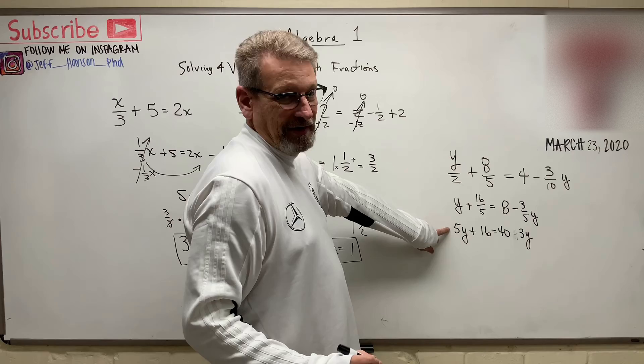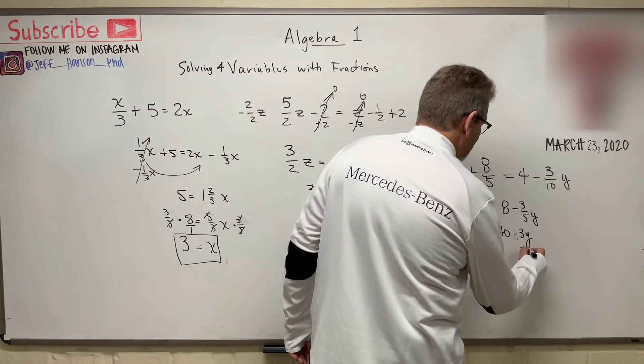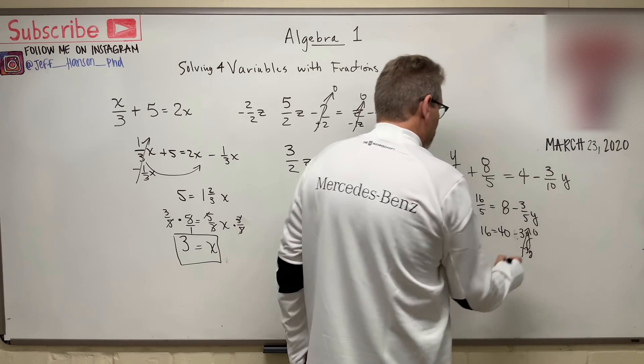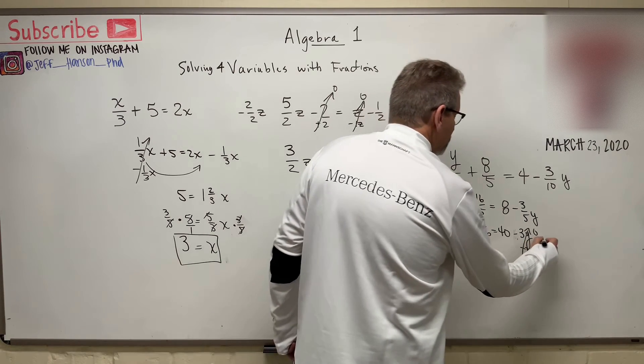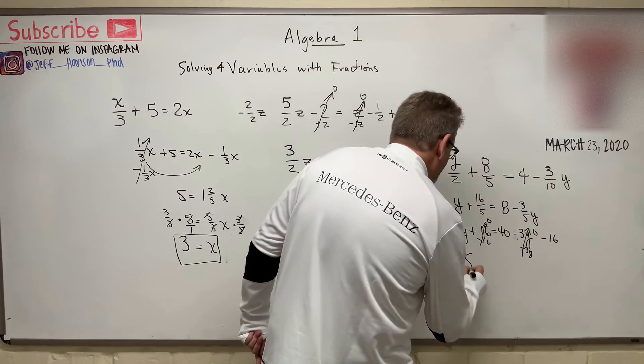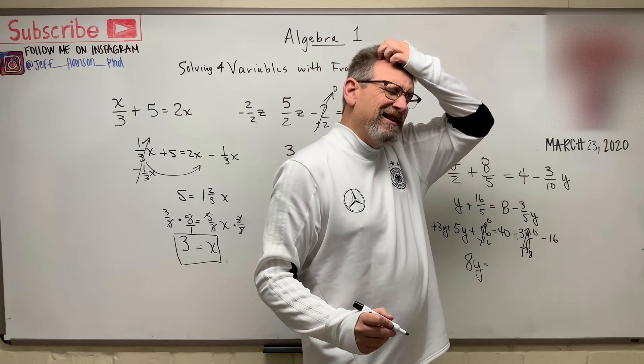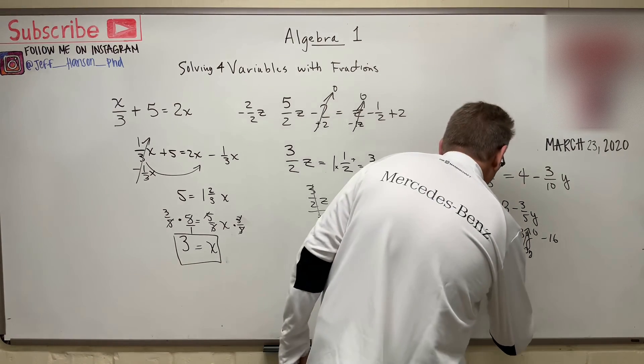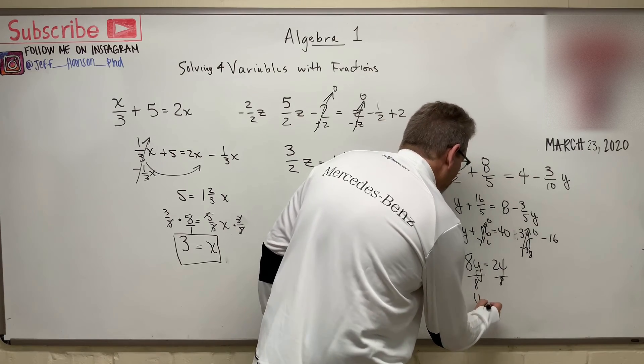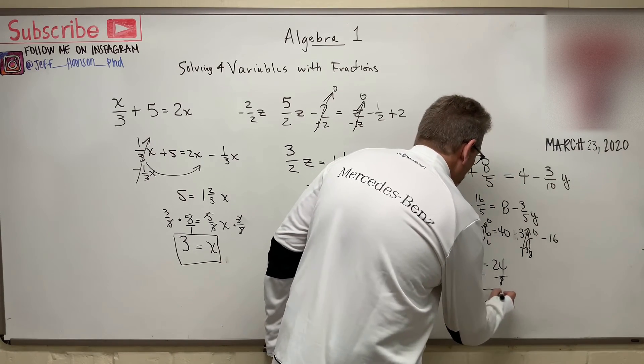Now that is pretty good, because now that's looking pretty much like these other ones that we just did. So how about we do this? Add 3y, add 3y. That would go to 0, wouldn't it? Subtract 16, subtract 16. Now that goes to 0. So 3 plus 5 is 8y is equal to 40 minus 16, that's 24. Then divide both sides by 8, and y is equal to, how many times does 8 go into 24? Three times. So y equals 3.